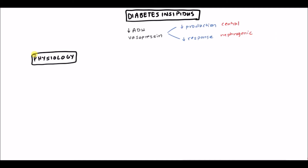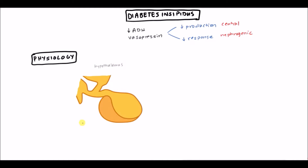We're going to put up a pituitary gland to get oriented. Here is the hypothalamus. At the bottom is the anterior pituitary, which secretes hormones such as gonadotropin-releasing hormone, TSH, FSH, and LH — none of which we're dealing with here. Then you have the posterior pituitary, which is the part of the pituitary gland that secretes ADH as well as oxytocin.